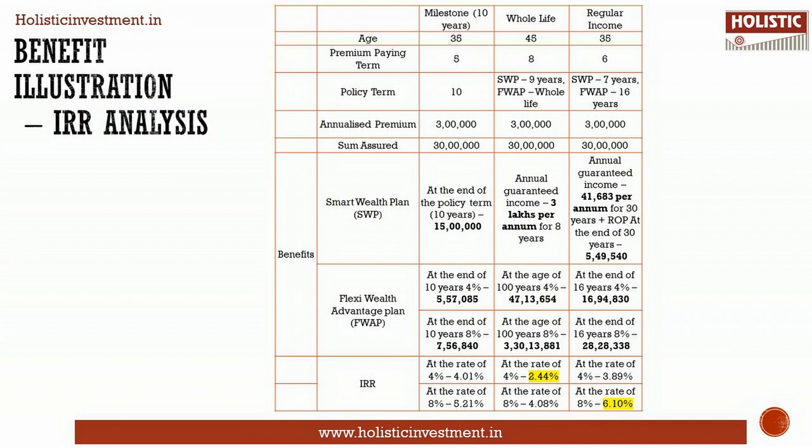So let us calculate the IRR of Max Life Smart Capital Guaranteed Solution using the Max Life online calculator. Under all plans, the annual premium is assumed as Rs. 3 lakhs. Under Milestone 10, pay for 5 years and get the benefit of both plans at the end of year 10. Under the Whole Life option, pay for 8 years and get the benefit of Smart Wealth as regular income for 8 years and Flexi Wealth Advantage till age 100.